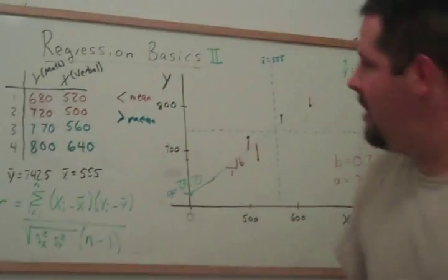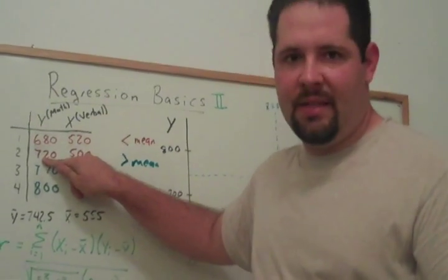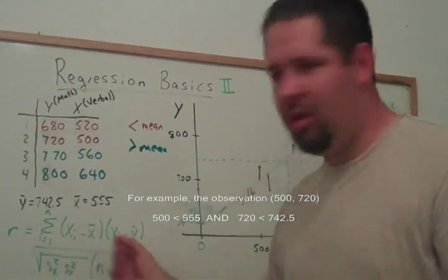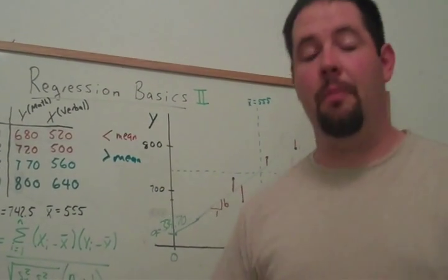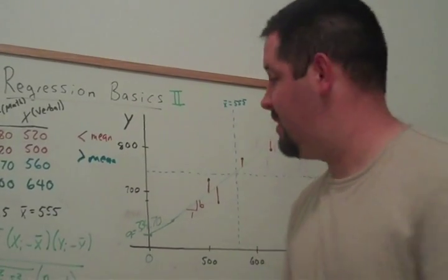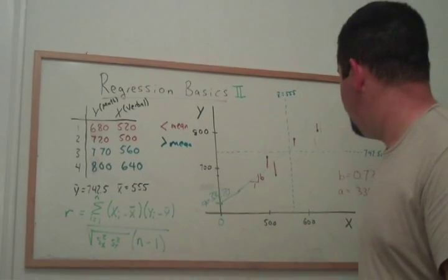Notice also that if y is less than its mean and x is less than its mean, we're multiplying two negative numbers. But two negative numbers, the product of that is positive, and so we'll get a positive contribution to the sum.